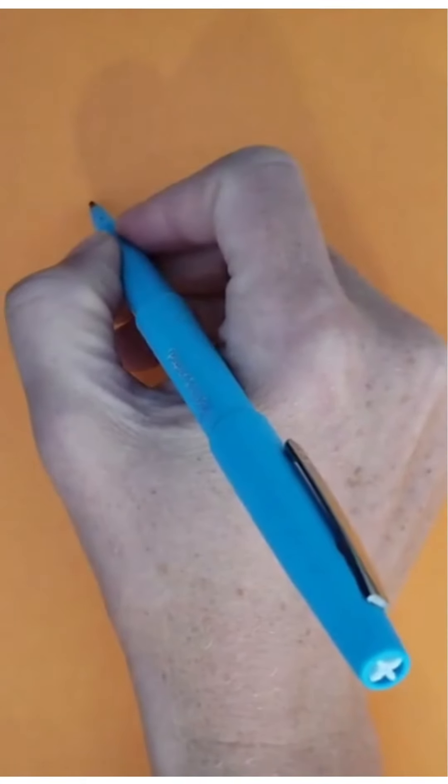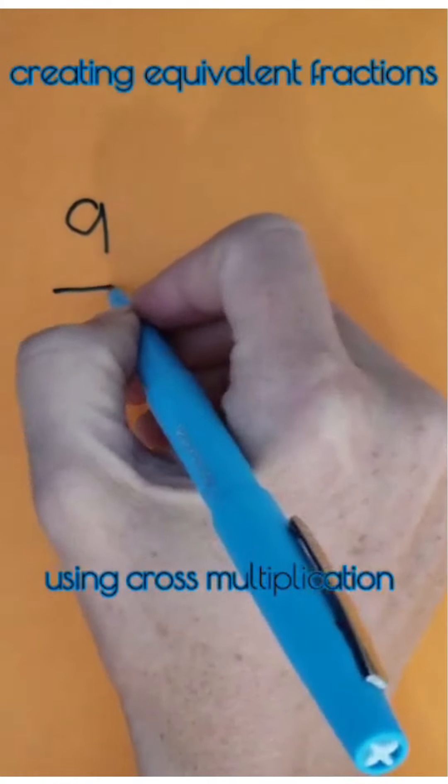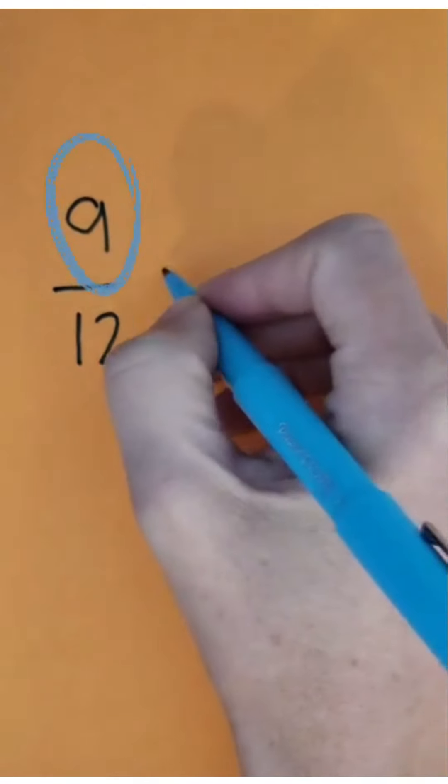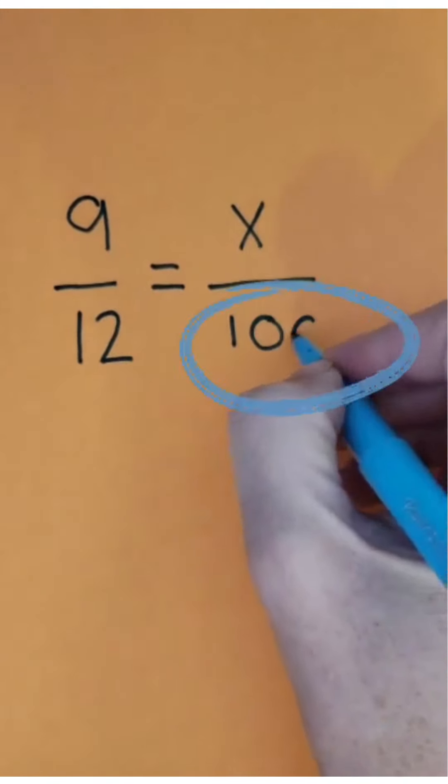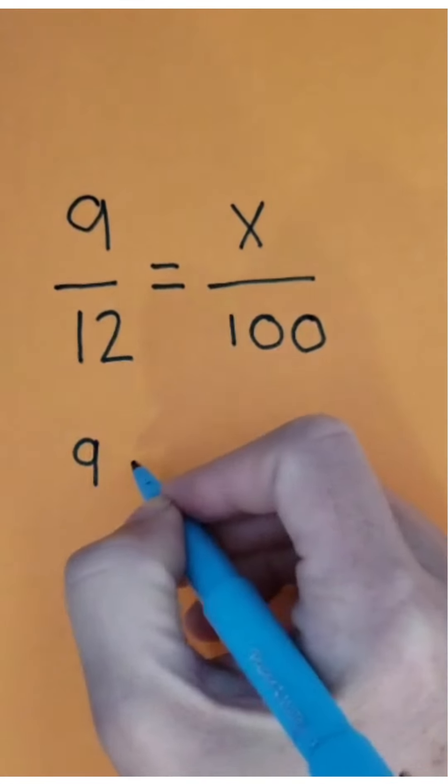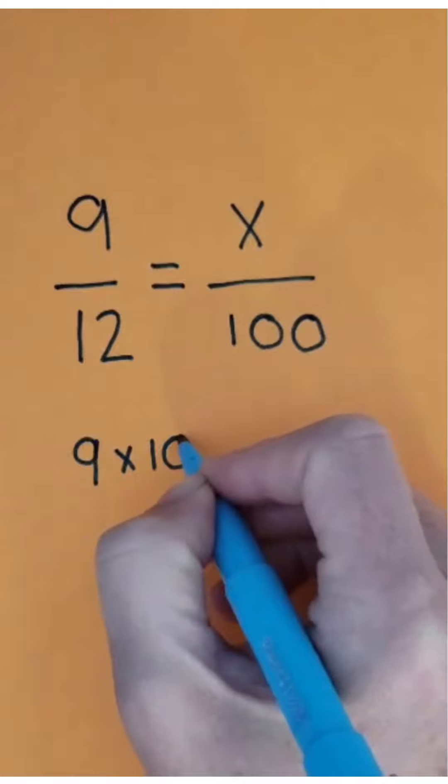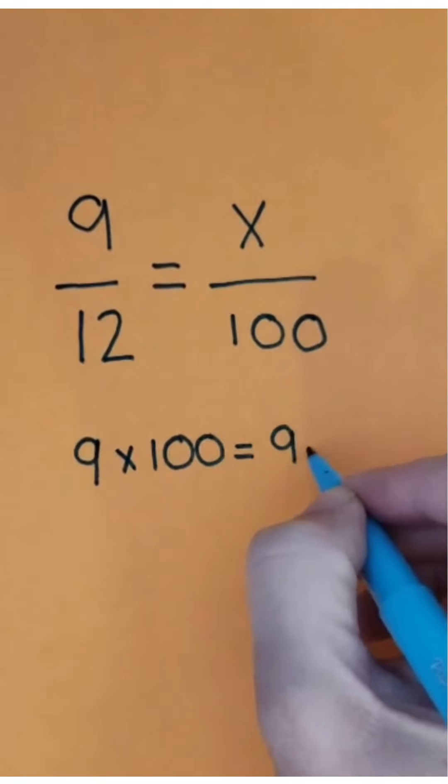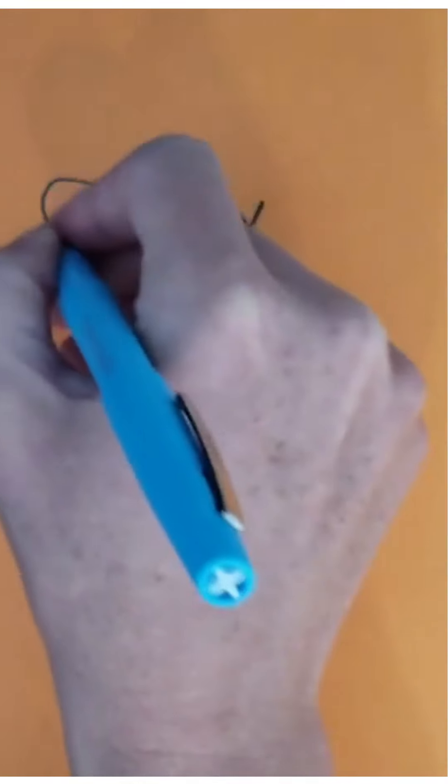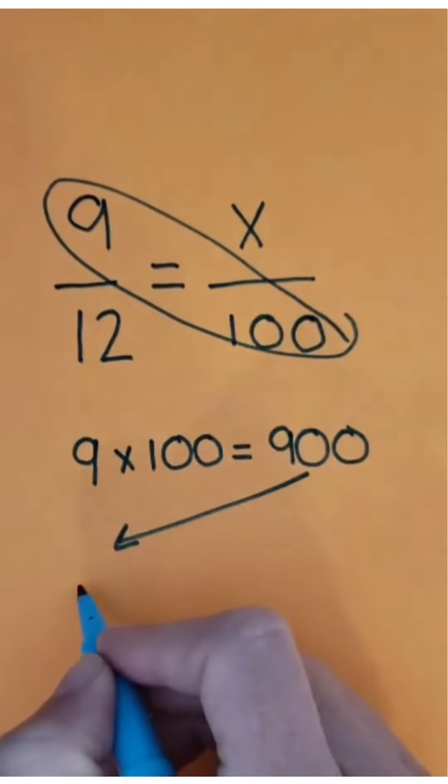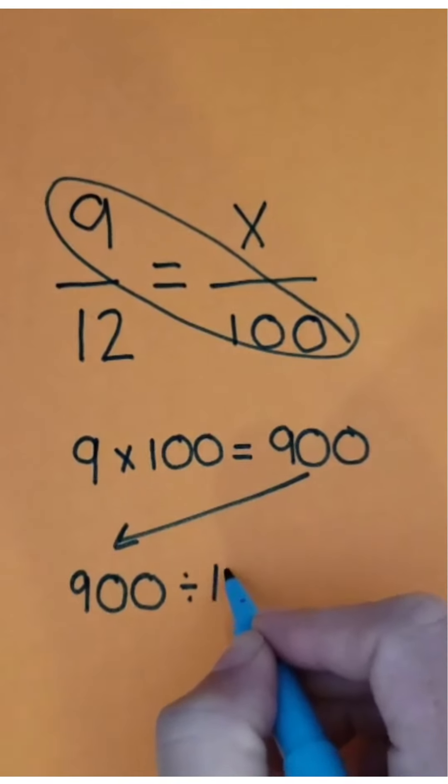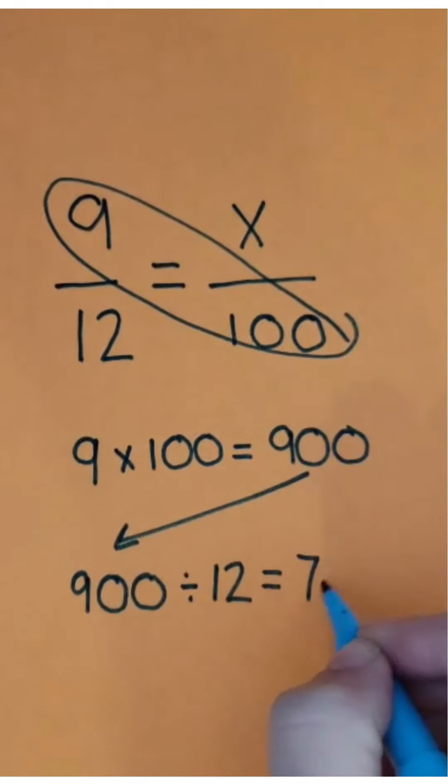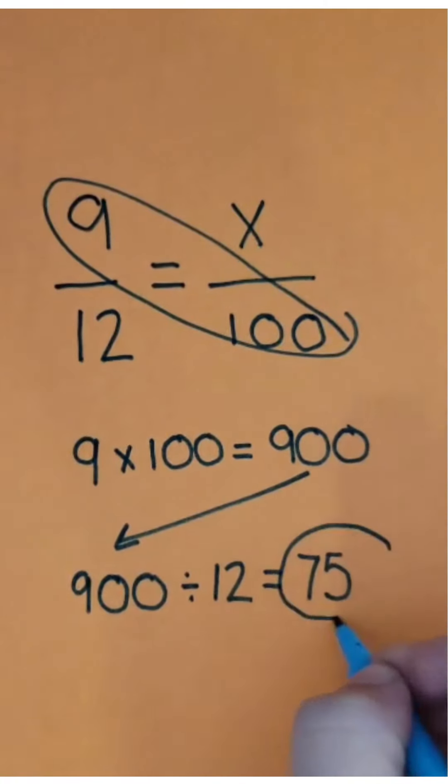Let's take the fraction 9/12. My numerator is 9, my denominator is 12. I'm going to set that equivalent to a fraction out of 100 because percent is always out of 100. Using cross multiplication, 9 times 100 equals 900. Let me show you that with circling it. Then I'm going to take my product of 900 and divide that by 12, my denominator of the fraction. 900 divided by 12 is 75. I did use a calculator for that because I don't know that fact right in my head, but I could also work it out on paper.